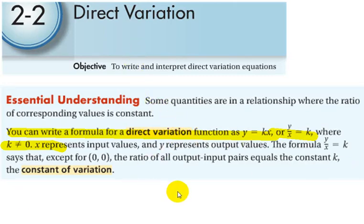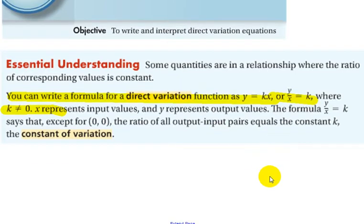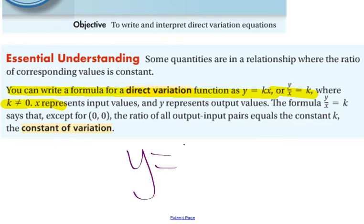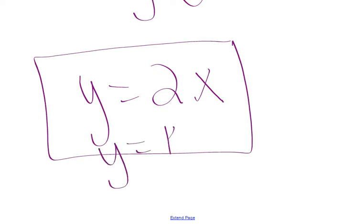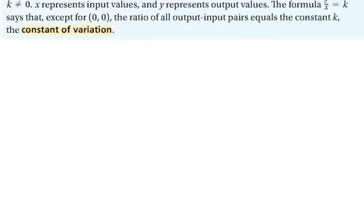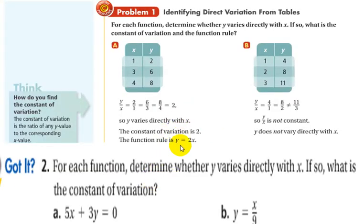Now, we're going to back up a little bit to direct variation. Direct variation is what we teach before slope. And it's a simplistic view of what slope is. So, it says you can write a formula for direct variation as a function of y equals kx. And k is called your constant of variation. So, if I have y equal to 2x, I can say this is a direct variation because it follows this formula. And my constant of variation is 2.